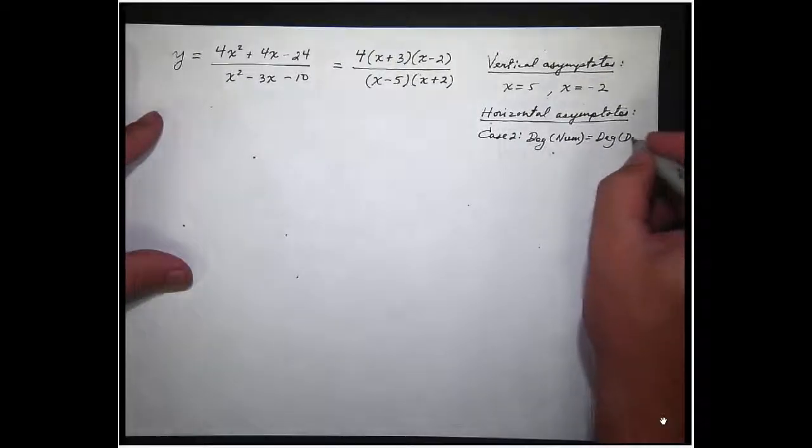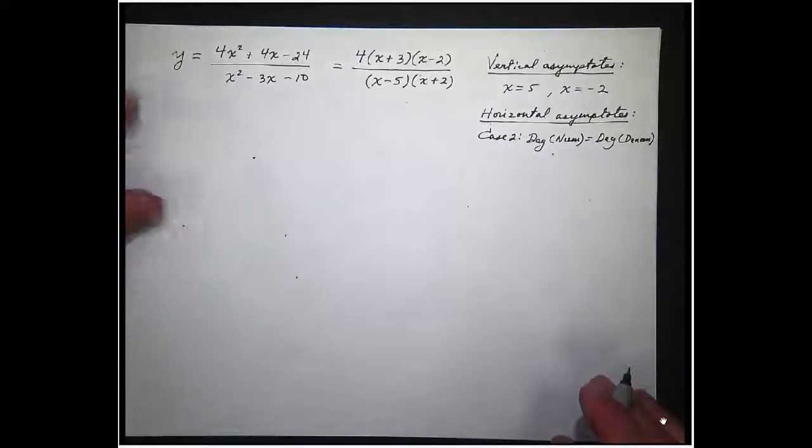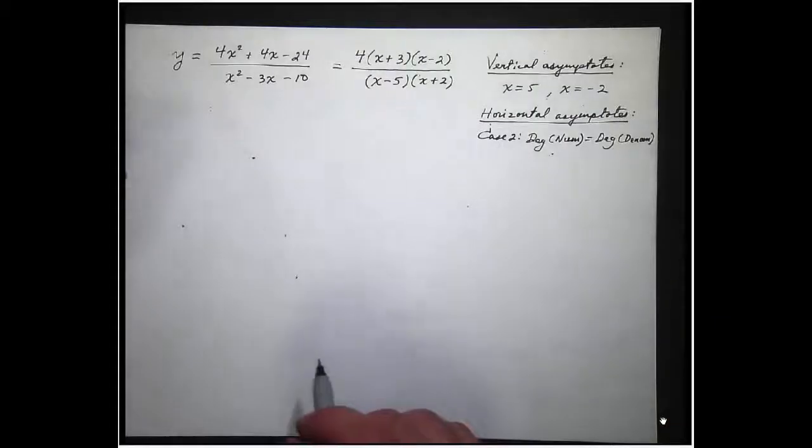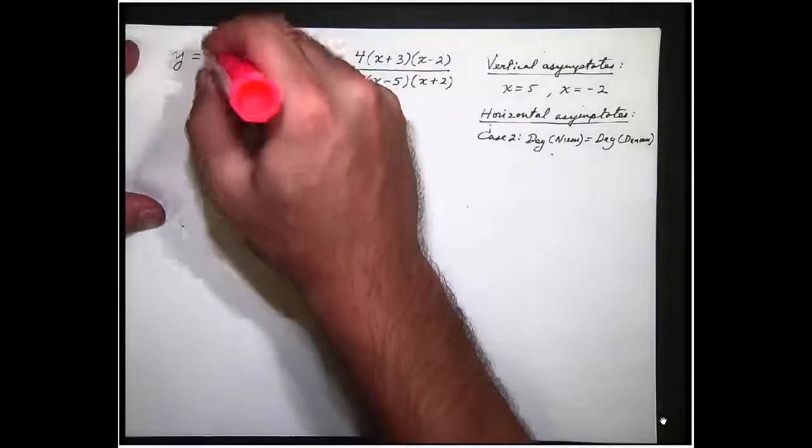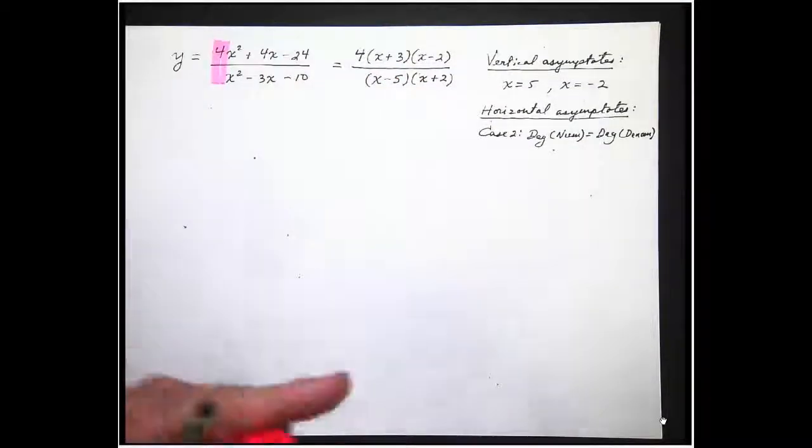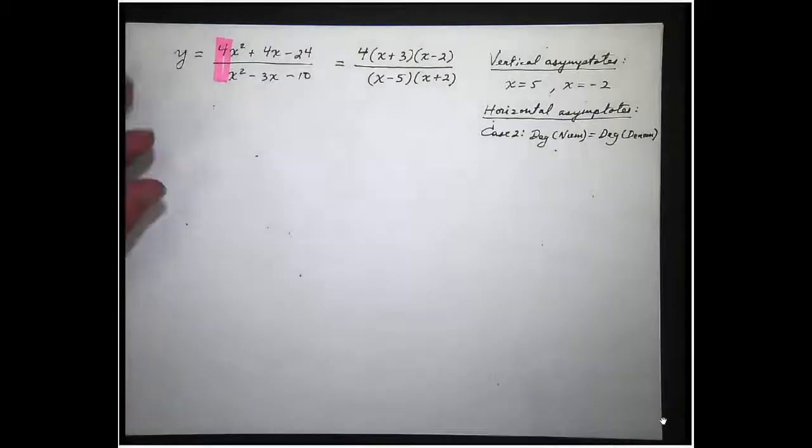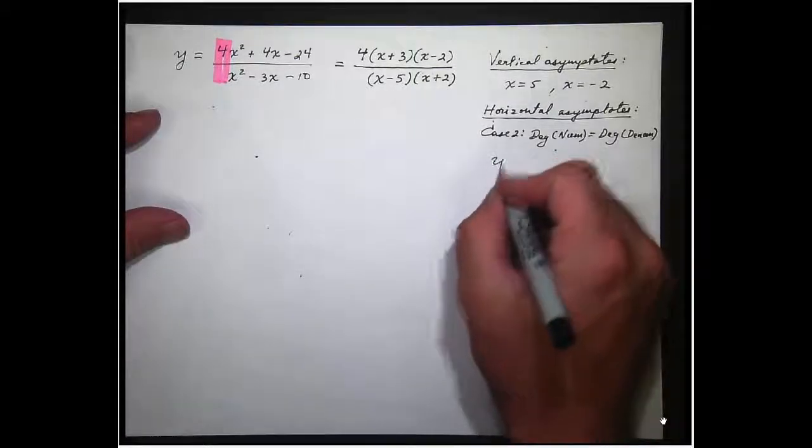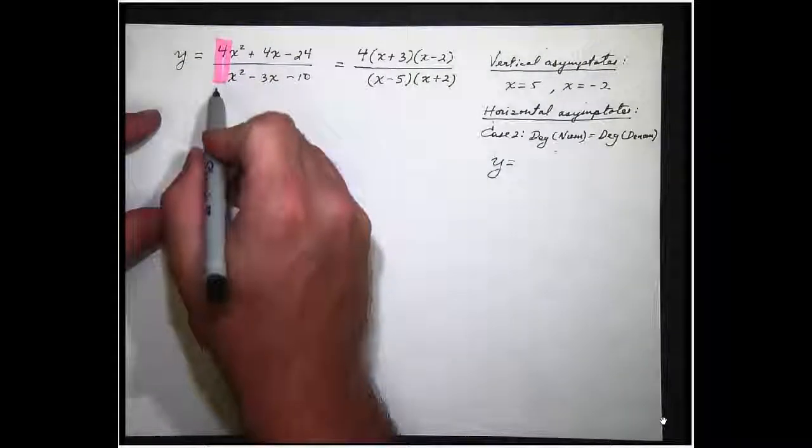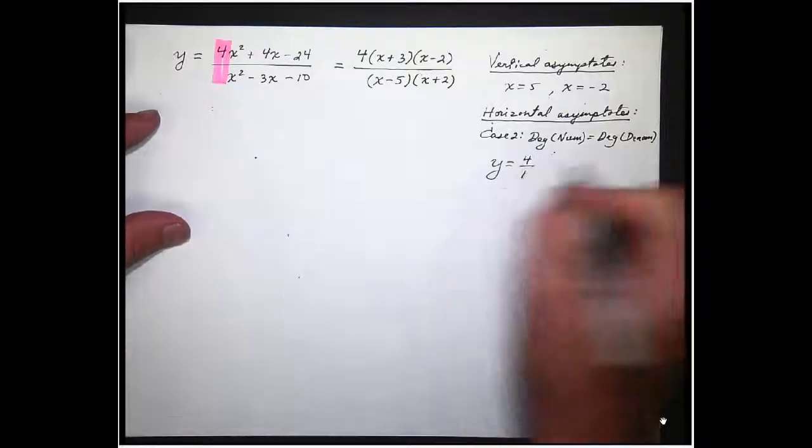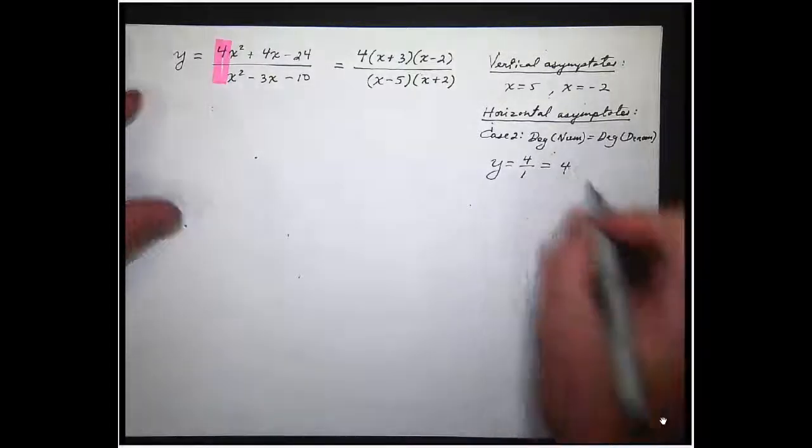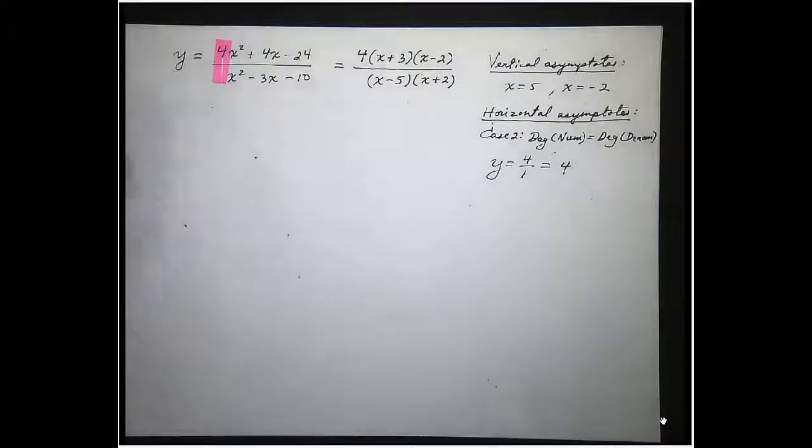Let me see if I can fit denom in there. So they're the same. Whenever they're the same we take the coefficients of the leading terms. The coefficient of the x² down there is a 1. So it'll be the ratio of those leading coefficients, 4 over 1, which is 4. So the horizontal asymptote is at a height of 4.